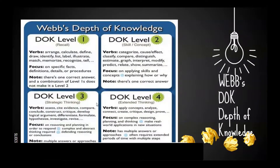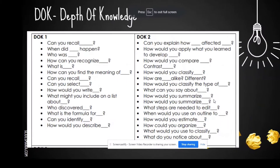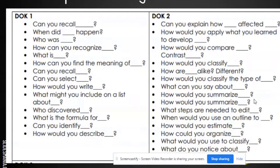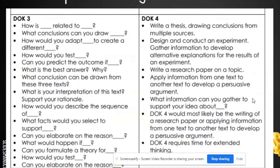Another type of questioning that promotes higher order thinking is Webb's Depth of Knowledge. The levels are similar: Level 1 is recall, Level 2 is knowing a skill or concept, Level 3 is strategic thinking, Level 4 is extended thinking. Examples could be Level 1: 'Can you recall?' or 'What is?' Level 2: 'Could you explain how?' or 'How would you compare?' Higher levels might look like 'How would you describe the sequence of?', 'What is your interpretation of this text?', or a DOK Level 4: 'Write a research paper' or 'Apply information from one text to another.'